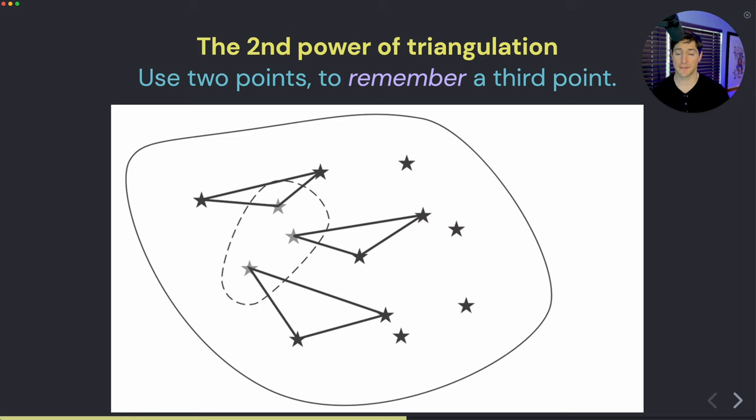I'm not sure if you've ever had a good friend, or maybe it's your significant other, and between the two of you, you can recall that thing. But if you were just by yourself, you wouldn't have been able to. That's an example of using two points to triangulate back into the past to remember a third point.